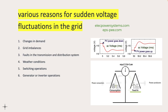There can be various reasons for sudden voltage fluctuations in the grid. Some common causes include changes in demand. When there is a sudden increase or decrease in electricity demand, it can lead to voltage fluctuations. For example, during peak hours when there is high demand, the voltage may drop due to the strain on the grid. Conversely, when there is a sudden decrease in demand, the voltage may rise.